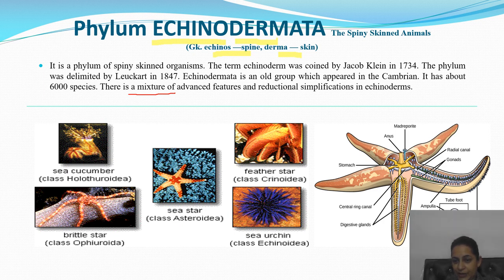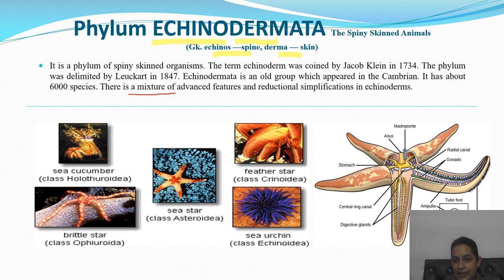Looking at the dissected view of a starfish: the anus and madreporite are on one side, the stomach is in the center in a ring-like structure, below that is the nerve ring, and there are radial canals extending into the arms. The gonads are visible on the sides, tube feet are present, and digestive glands are also present. The mouth is on the lower ventral surface.